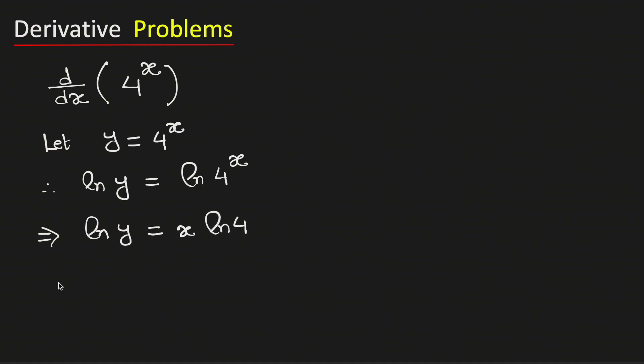Now we will differentiate both sides with respect to x. We know that the derivative of ln y equals 1 over y, and we need to write dy/dx.